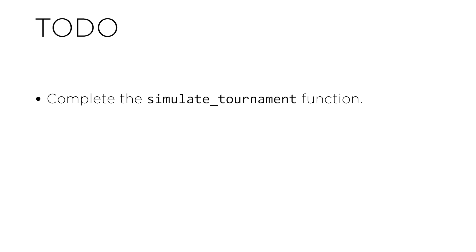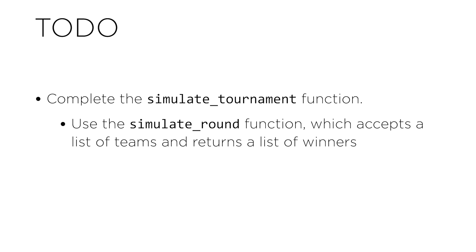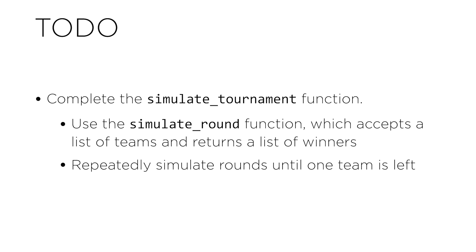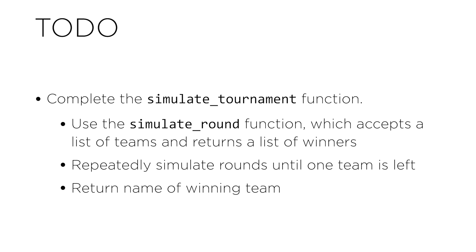You'll also want to complete the simulate_tournament function. The simulate_tournament function should simulate an entire tournament, accepting a list of teams and producing who the winner of the simulated tournament is. In doing so, you'll probably want to call the simulate_round function — which we've already written for you — which accepts a list of teams and returns a list of winners from that round. You'll want to run this repeatedly, simulating rounds until only one team is left. If you start with 16 teams, simulate_round gives you 8 winners, then 4, then 2, down to 1. Once you're down to just one winning team, return the name of that winning team so you can use it in your counts dictionary.